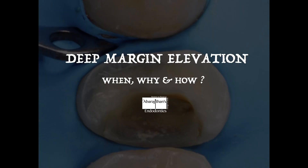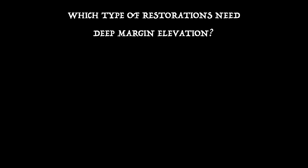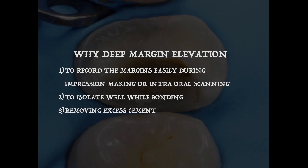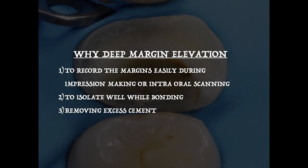Basically, deep margin elevation is nothing but making your margin supragingival whenever it is subgingival in your tooth preparation. It is especially done for indirect restorations that are adhesively bonded. The advantages are that by making the margin supragingival, it is very easy to record the margins both during impressions or intraoral scanning, and it is much easier to isolate the tooth so we can achieve a much more predictable bonding. It also makes it very easy to remove excess cement and prevent it from being pushed gingivally or subgingivally.